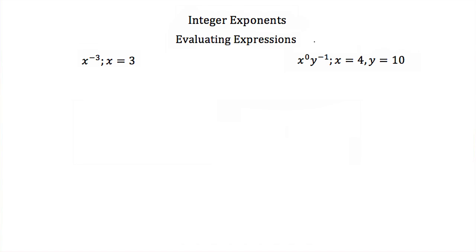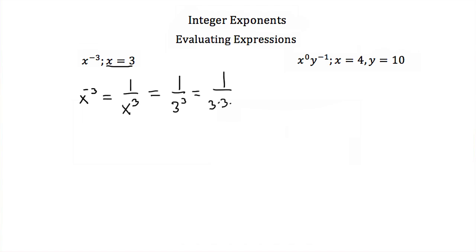Let's take what we've learned and try to evaluate these expressions. If we have x to the minus 3 and we're told that x is equal to 3, then x to the negative 3 is equal to 1 over x cubed. Plugging in x equals 3, this is 1 over 3 to the third, which equals 1 over 3 times 3 times 3. Since 3 times 3 is 9, and times 3 again is 27, x to the negative 3 when x equals 3 is just 1/27.